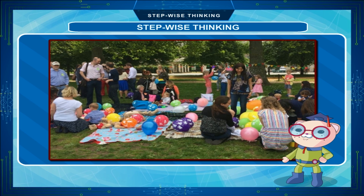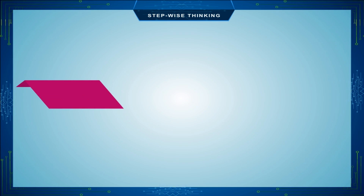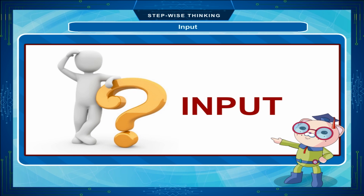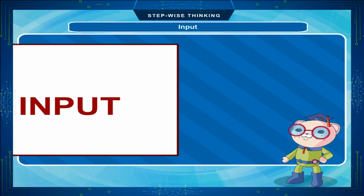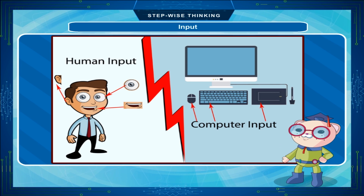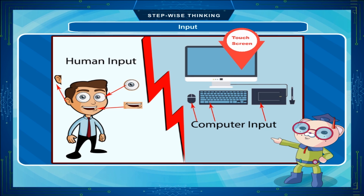All thinking work is done in three steps. First, Input: we input the question from any input part and keep it in our temporary memory or workspace. In the case of human beings, we use ears, eyes, nose, skin, and tongue for input. In the case of computers, we use mouse, keyboard, touchscreen, and touchpad for input.